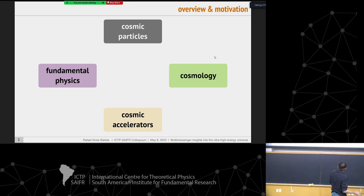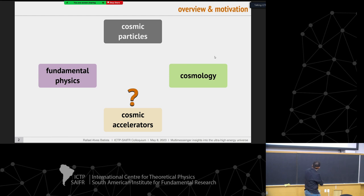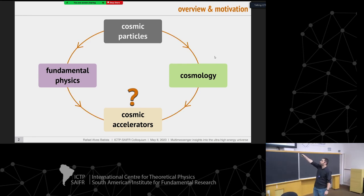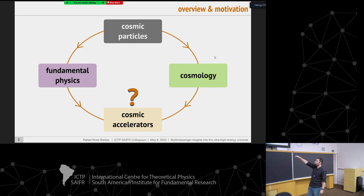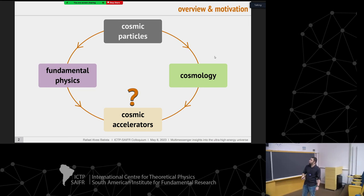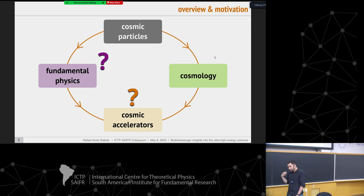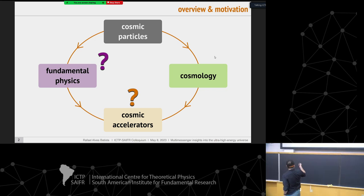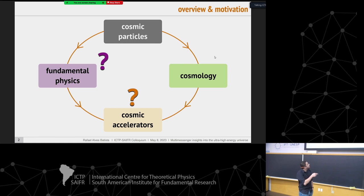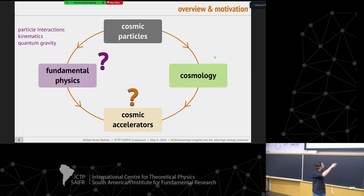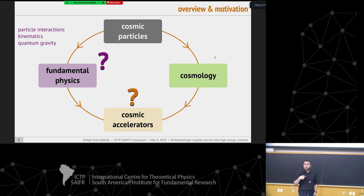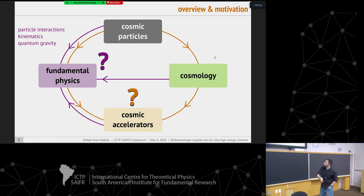If you're looking for information about the cosmic accelerator — essentially astrophysics — we need these two ingredients. But if you are looking for information about fundamental physics, such as signatures of Lorentz invariance violation and other things, we would need information about cosmology and which type of cosmic accelerators are emitting these particles, and the arrow goes in that direction. Similarly for cosmology: if we want to study photon backgrounds or magnetic fields in the universe, we can go in this direction if we know the sources and how the particles interact.